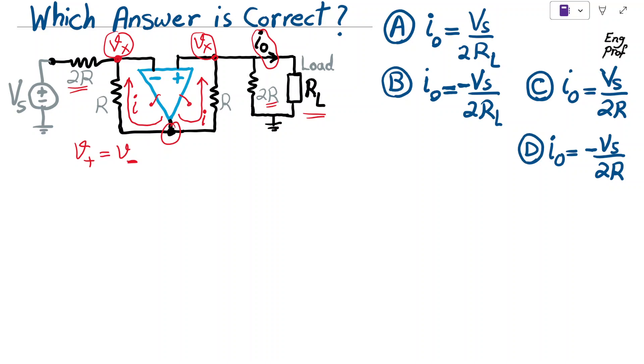This current I goes and reaches this node X, but cannot go through the input terminal of the ideal op-amp because that's infinite impedance. So nothing goes there. This current I should continue going this way. This node at the input is Vs, and we can see that through the 2R resistor, the current I is flowing. So I can now find it. I can say current I is effectively Vx minus Vs divided by 2R.